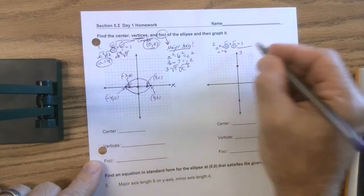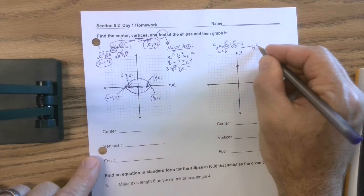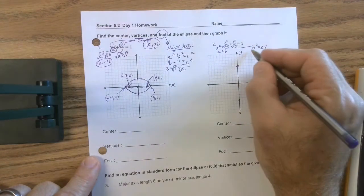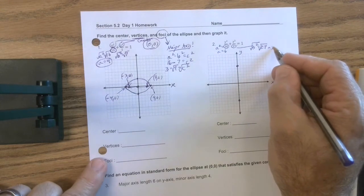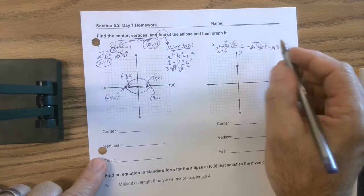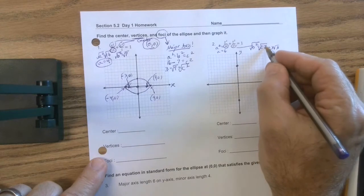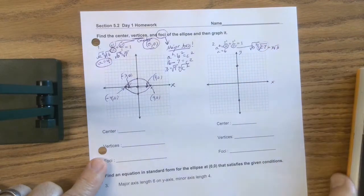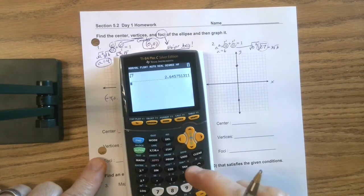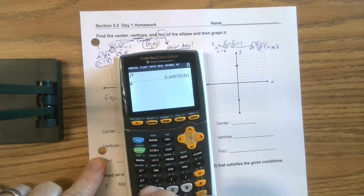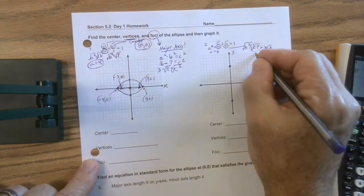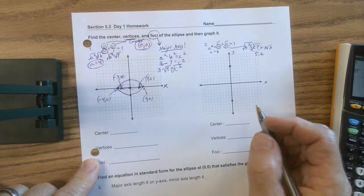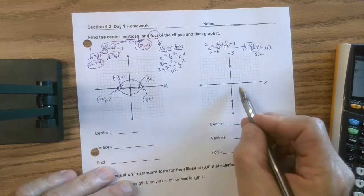Then I know that this 27 is b squared. So b squared is 27. Take the square root of that. Now some of you might be going, oh, that's 3 square root of 3. Yeah, you're right. But we're graphing right now. So we really want to know what this is. And so we're going to go square root, second, square root 27. 5 point, we'll call it 5.2.